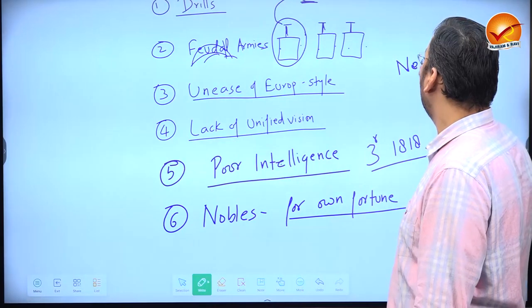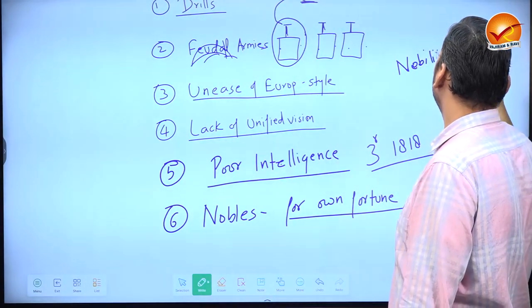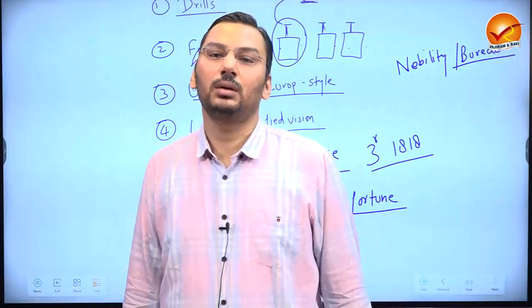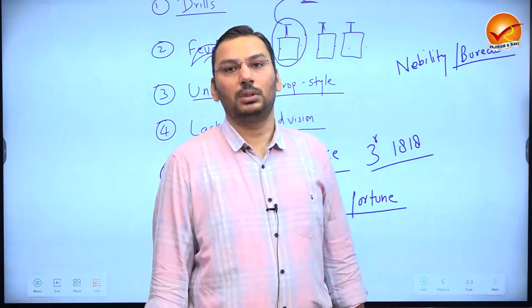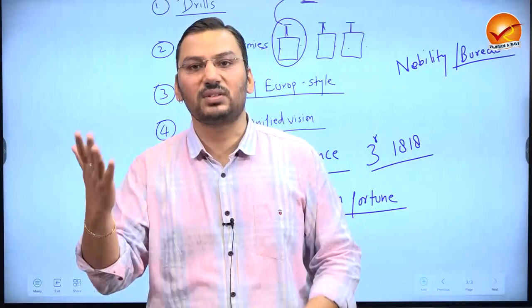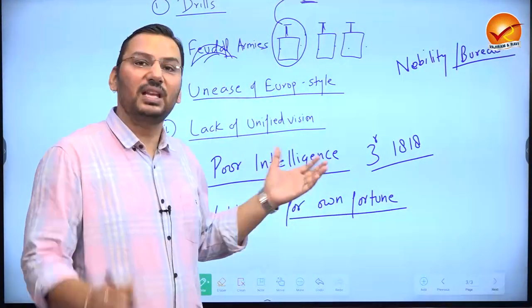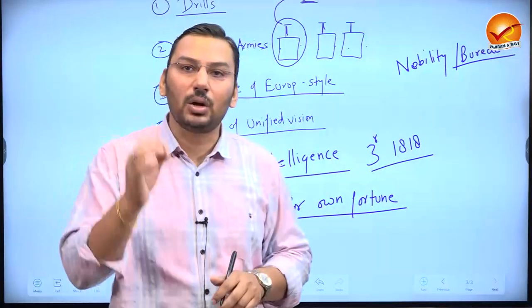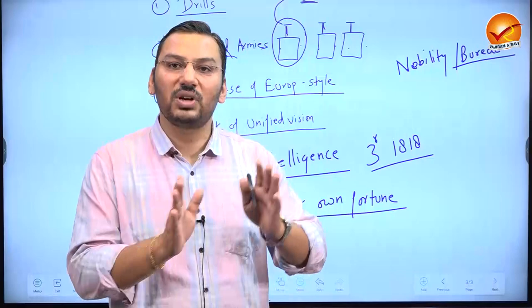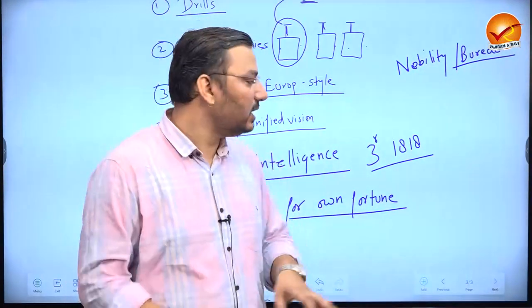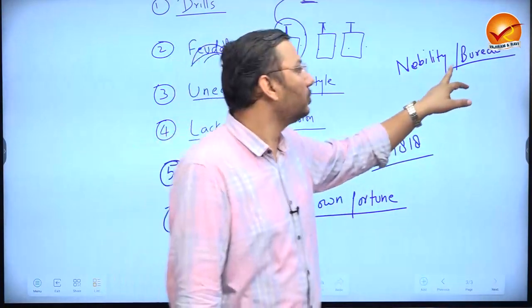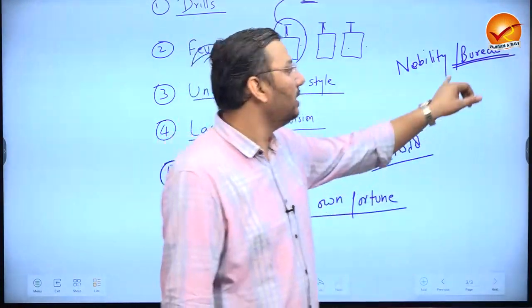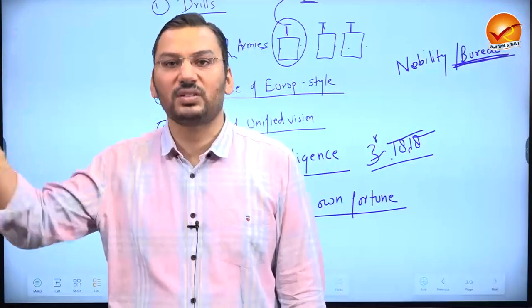Today we run countries with bureaucracy — we have ambassadors in 200 countries and none switch sides; that's how bureaucracy is trained and recruited. In feudal societies, posts are hereditary, people fight for personal ambition, they don't feel gratitude for being recruited, they have no post-retirement plans. In feudal societies, side-switching is common; in bureaucratic societies it does not happen. India's high commissioner in Pakistan will not switch sides precisely because we run a bureaucracy.